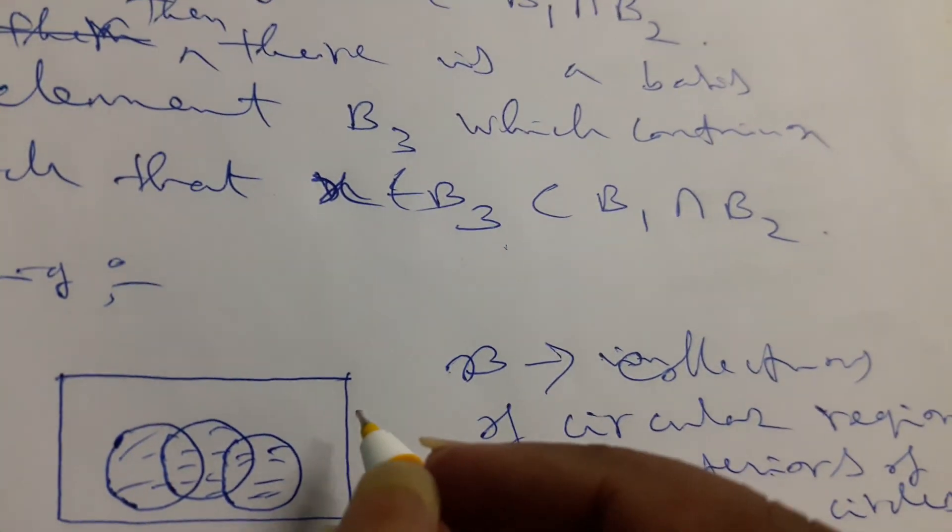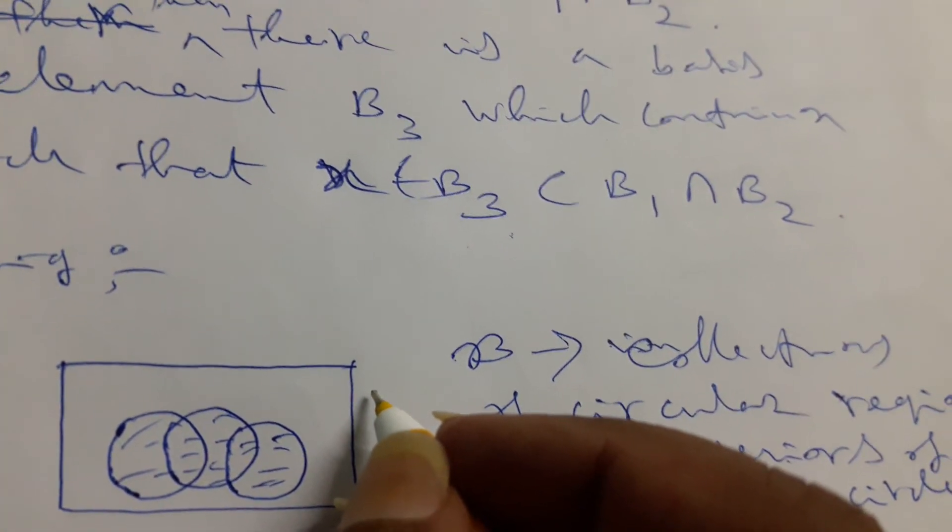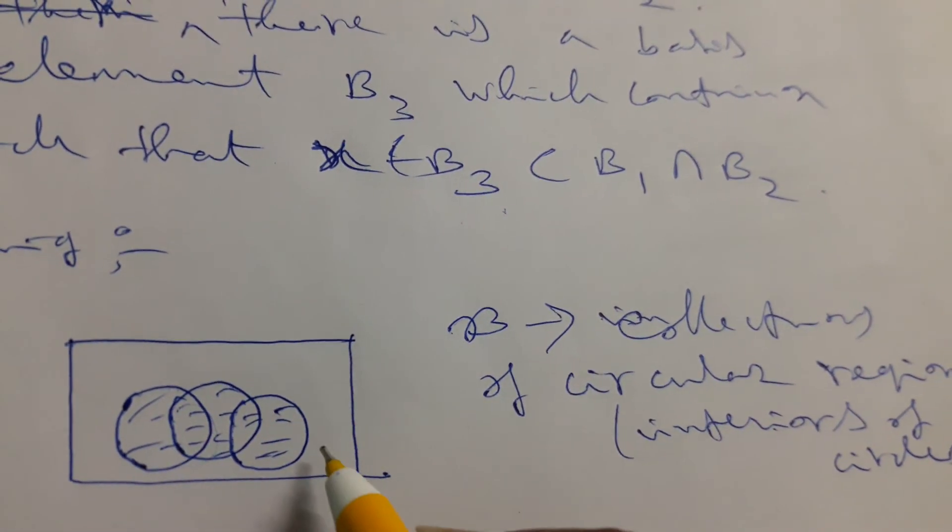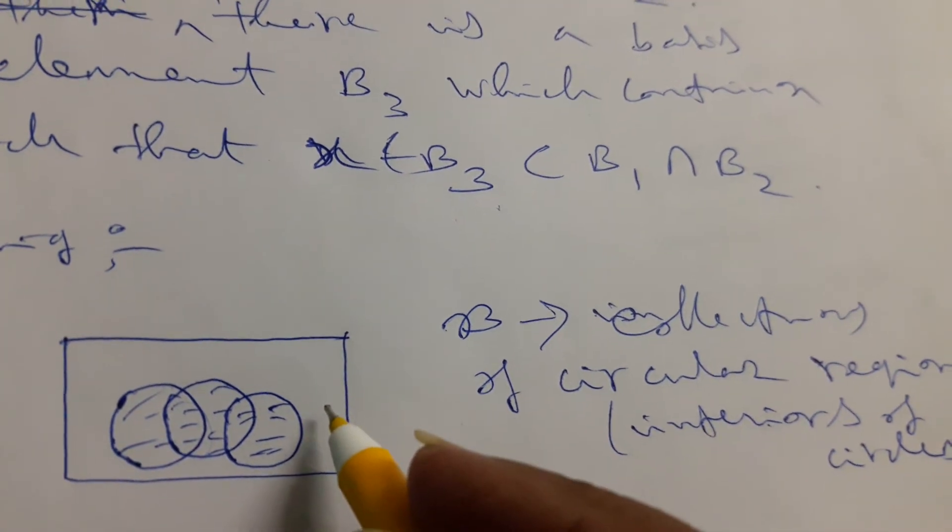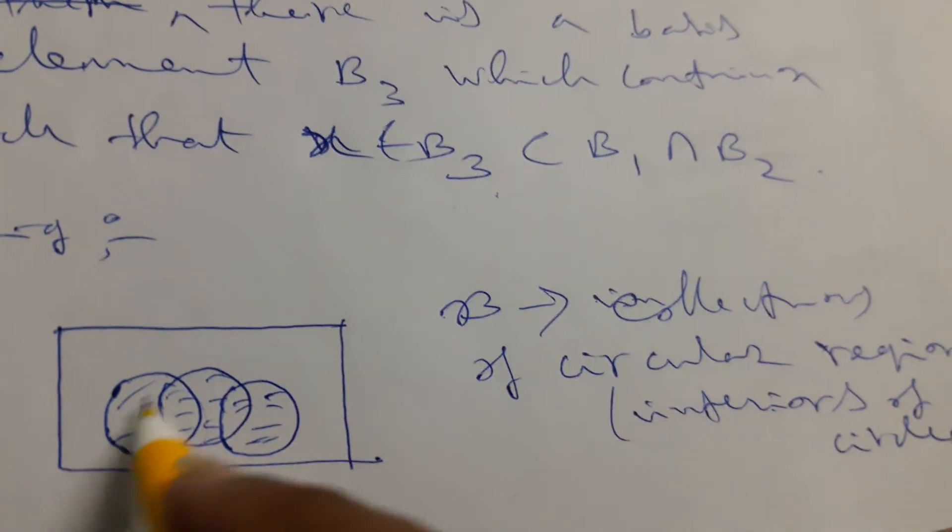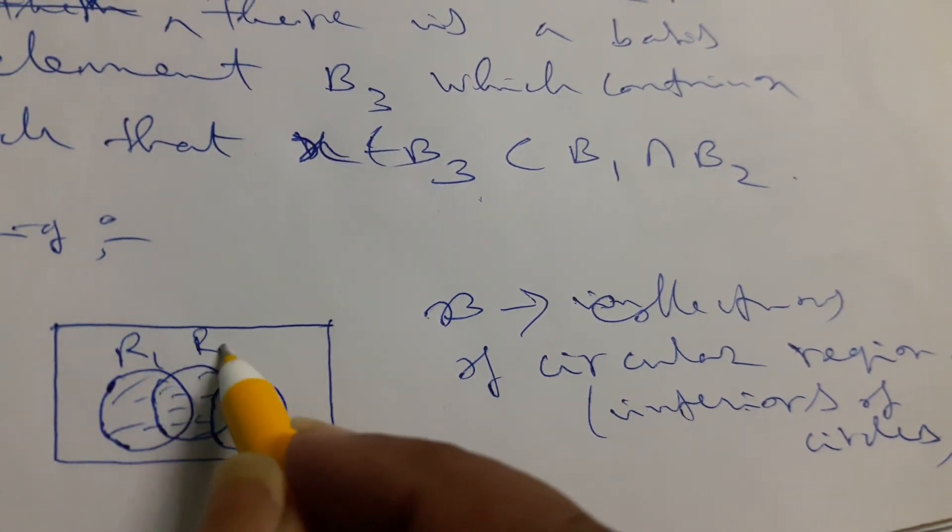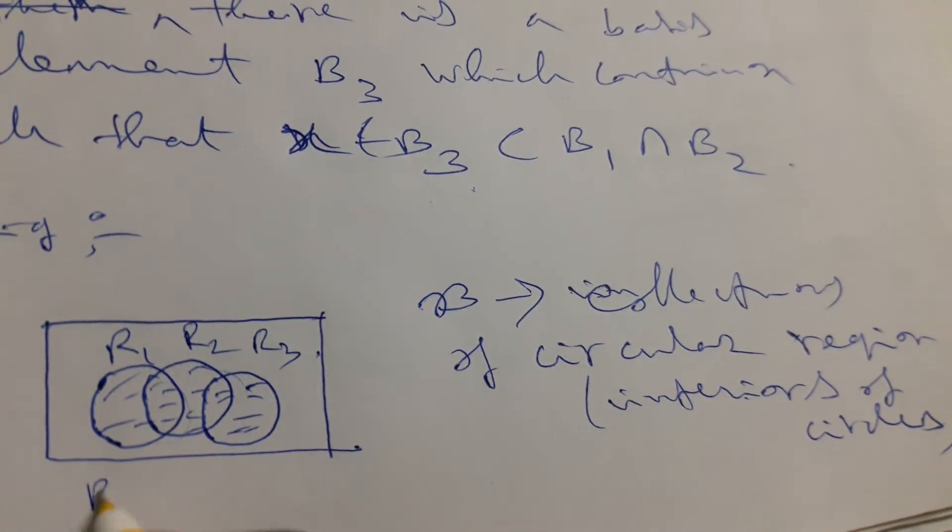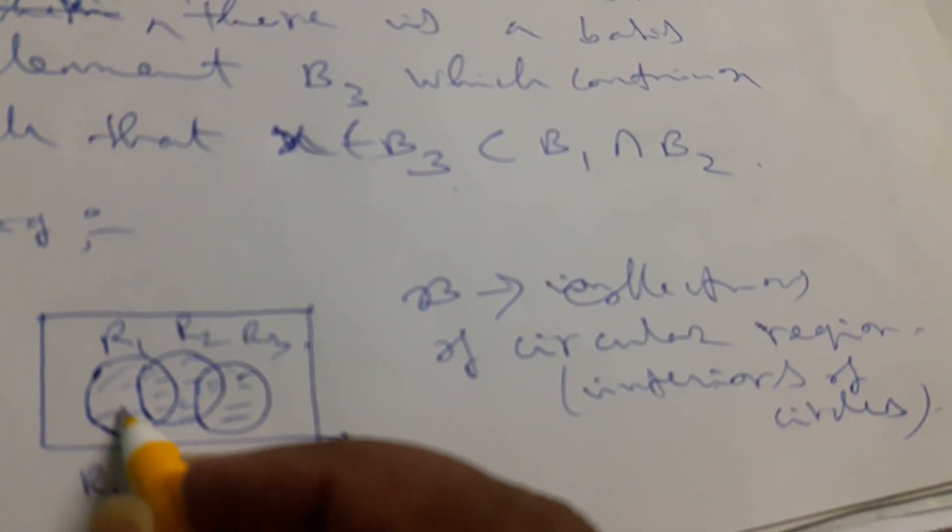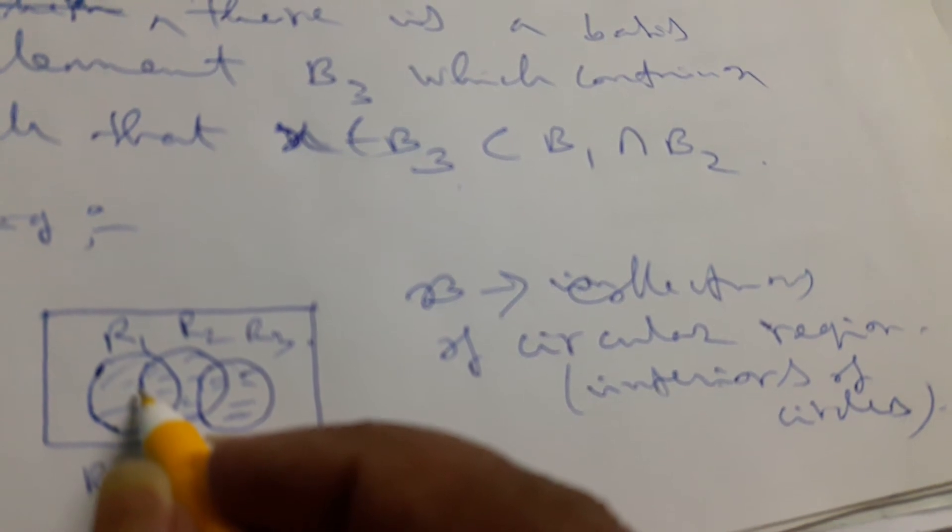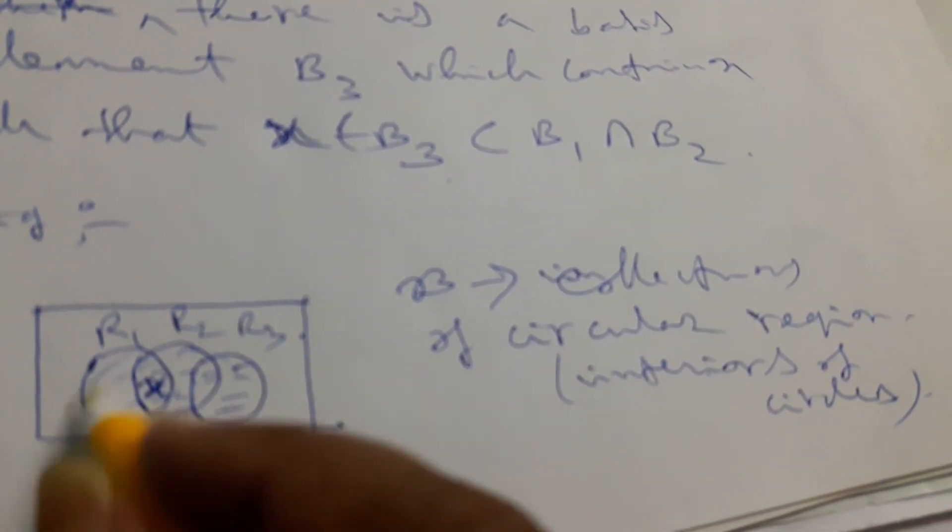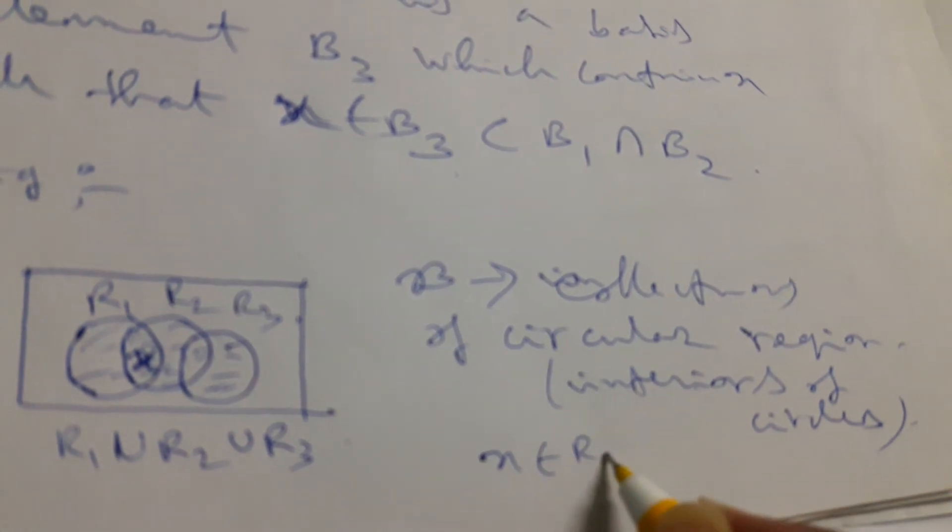We have to prove that these collections of regions form a basis. If X is any point in the plane, then there is a circular region R1 union R2 union R3. If X is any point in the plane, there is a circular region containing it. Obviously X belongs to R1 union R2 union R3.